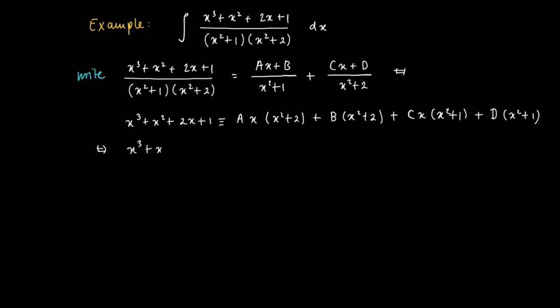And these things should be equal. So we're just going to count the number of x to the power of 3 on the left-hand side and the right-hand side. This should agree. Otherwise, we cannot have equivalent polynomials which form an identity on the left and the right-hand side. So we get A plus C times x to the power of 3 plus B plus D times x squared plus 2A plus C times x. And finally, as a constant, we get 2B plus D.